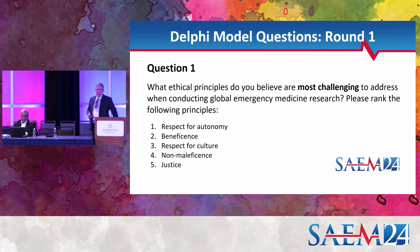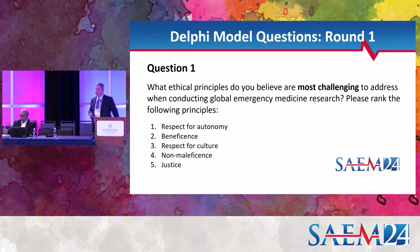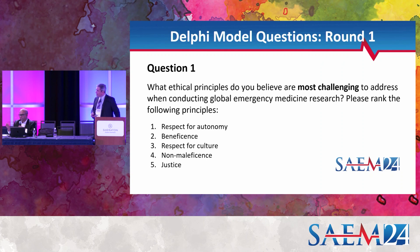We're going to go through some questions to get your feedback on them. We don't want you to answer the questions — we just want to hear your thoughts about how the question is framed and the kinds of responses provided. Question one: what ethical principles do you believe are most challenging to address when conducting global emergency medicine research? We purposely put 'respect for culture' out there because it's definitely not one of the Belmont principles. So just tell us — do you think that's an appropriate question? Give us a yes or no, and if not, let's discuss why.